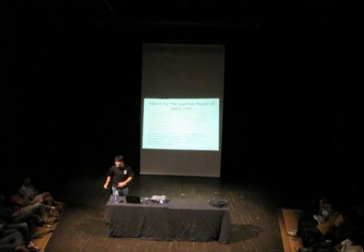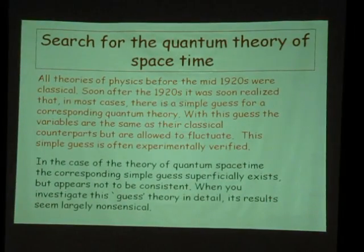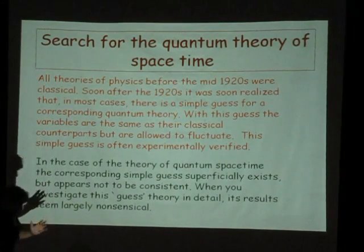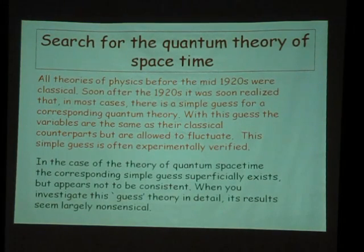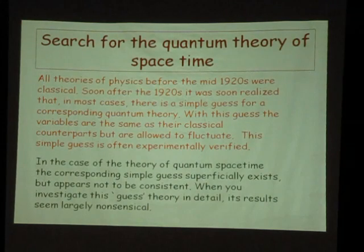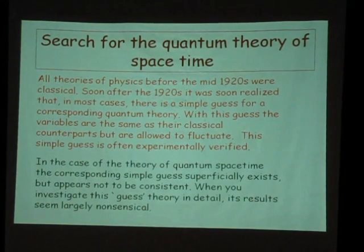So the natural guess is to try the same approach for space-time. Einstein gave us a great theory of classical space-time — let's try to make those variables fluctuate in a standard way. You try that, and it doesn't work. Not because experiments disagree, but because the resulting theory appears not to be mathematically consistent. The process that works for every other theory does not give you a consistent theory here — it's not a question of right or wrong, it's just nonsense. Though some physicists believe it does give a theory we haven't understood correctly yet.